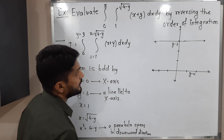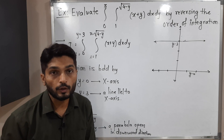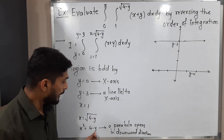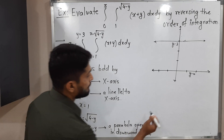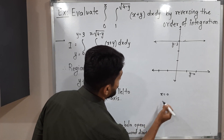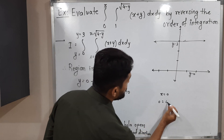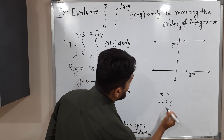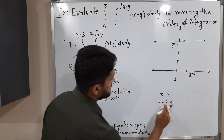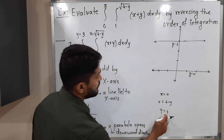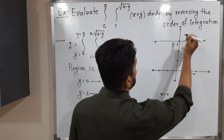Let me draw the parabola. To figure out how to draw it, I will put x equals 0 into x squared equals 4 minus y. We get 0 equals 4 minus y, so y equals 4. The point is (0, 4), so the parabola passes through (0, 4).